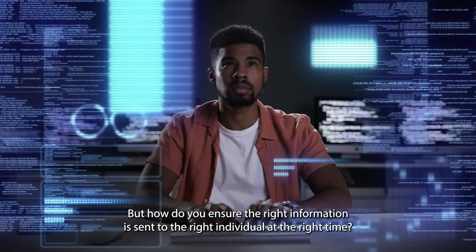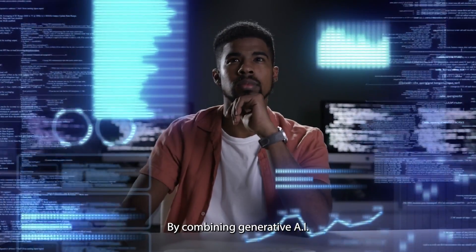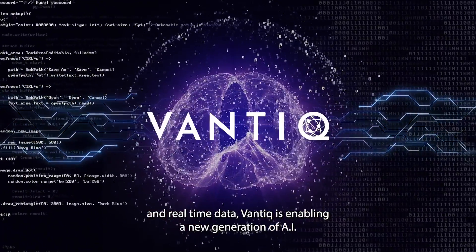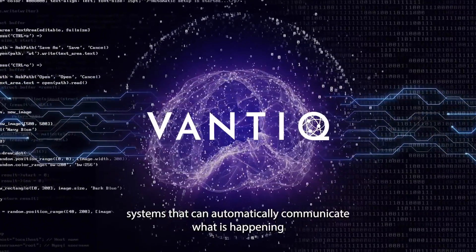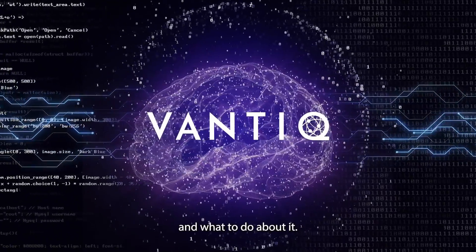But how do you ensure the right information is sent to the right individual at the right time? By combining generative AI and real-time data, Vantik is enabling a new generation of AI systems that can automatically communicate what is happening and what to do about it.